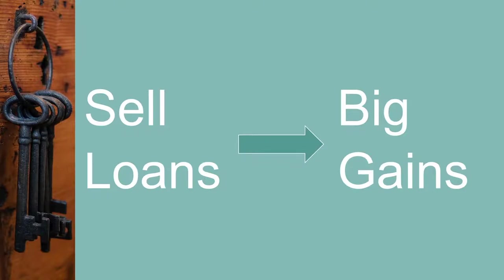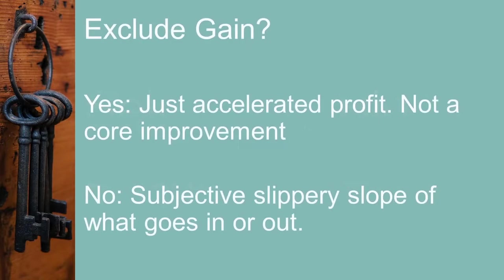Those loan sales triggered significant gains. Instead of earning steady profits on those loans over their lives, we got those profits all at once in the gain. A case could be made to exclude them because we just accelerated profits from liquidity mitigation, not from an improvement in core operations.